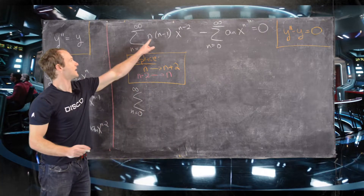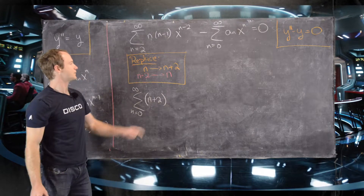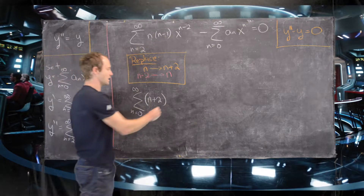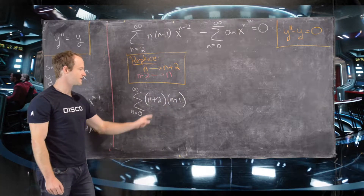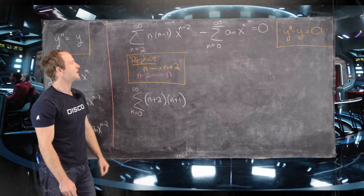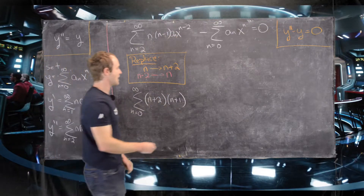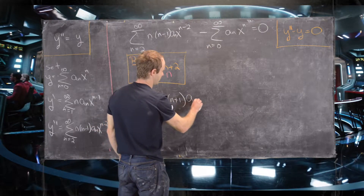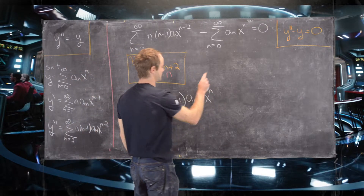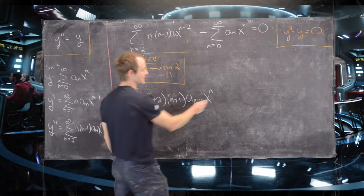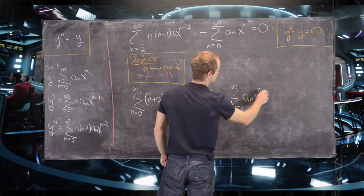With the re-indexing applied, the first series becomes the sum from n = 0 to infinity of (n+2)(n+1)·aₙ₊₂·xⁿ. The factor (n+2)(n+1) comes from replacing n with n+2 and n−1 with n+1 — a falling product of consecutive integers. Then we have minus the sum from n = 0 to infinity of aₙ·xⁿ equals 0.